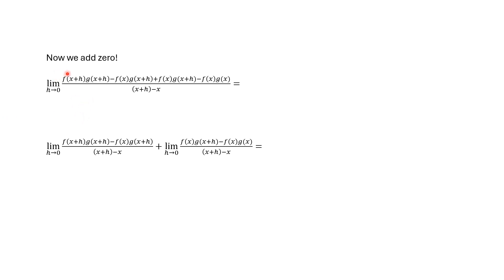So we now need to add zero. The zero is going to be: negative f of x times g of x plus h, plus f of x times g of x plus h. We add and subtract the same thing — that is adding zero, and we can always do that. We will then break our limit into two parts, separating the first two terms of the numerator from the second two terms. The denominator will remain the same.